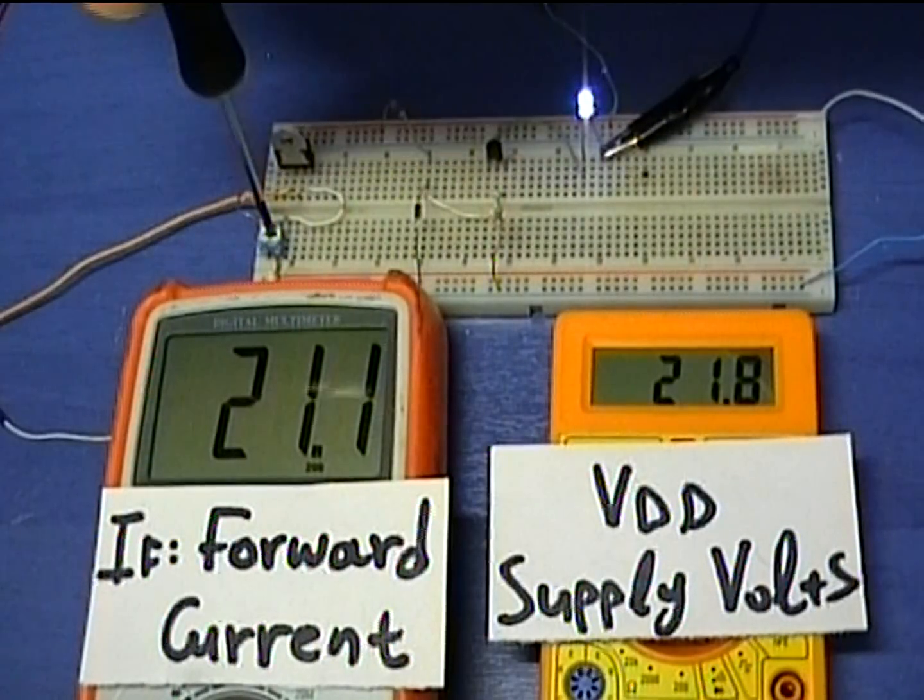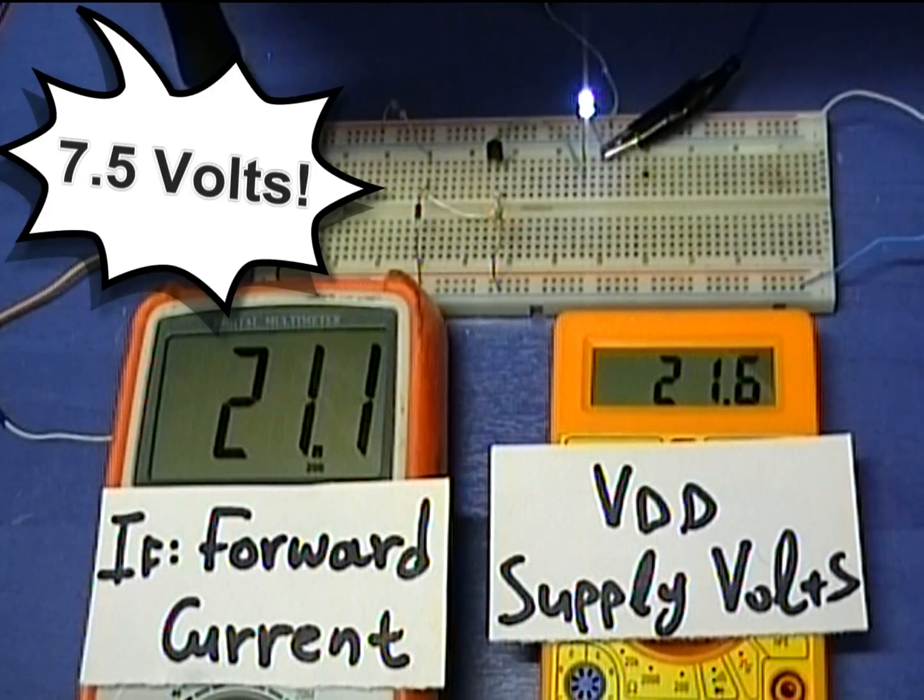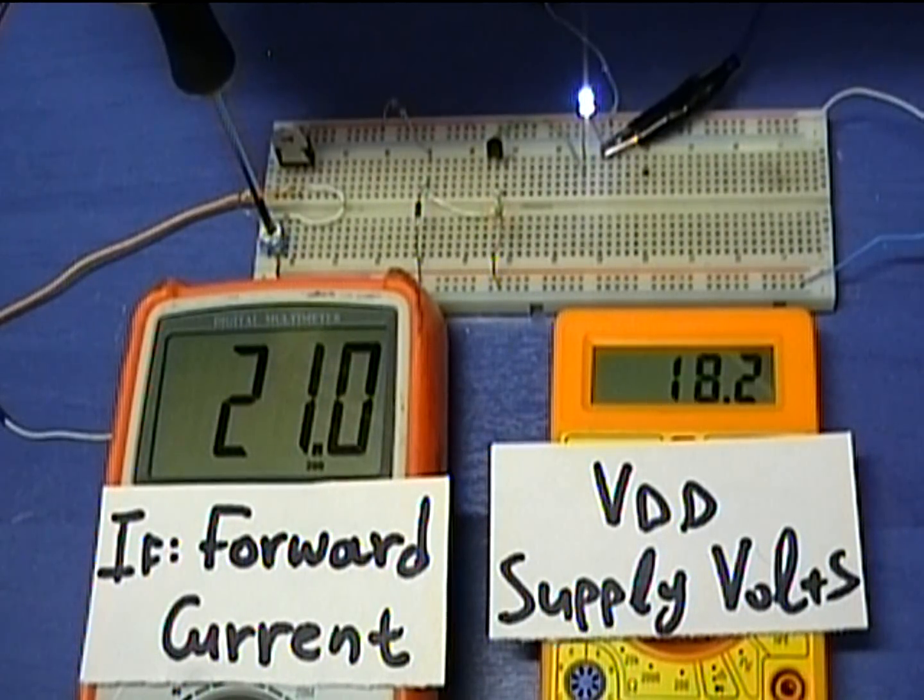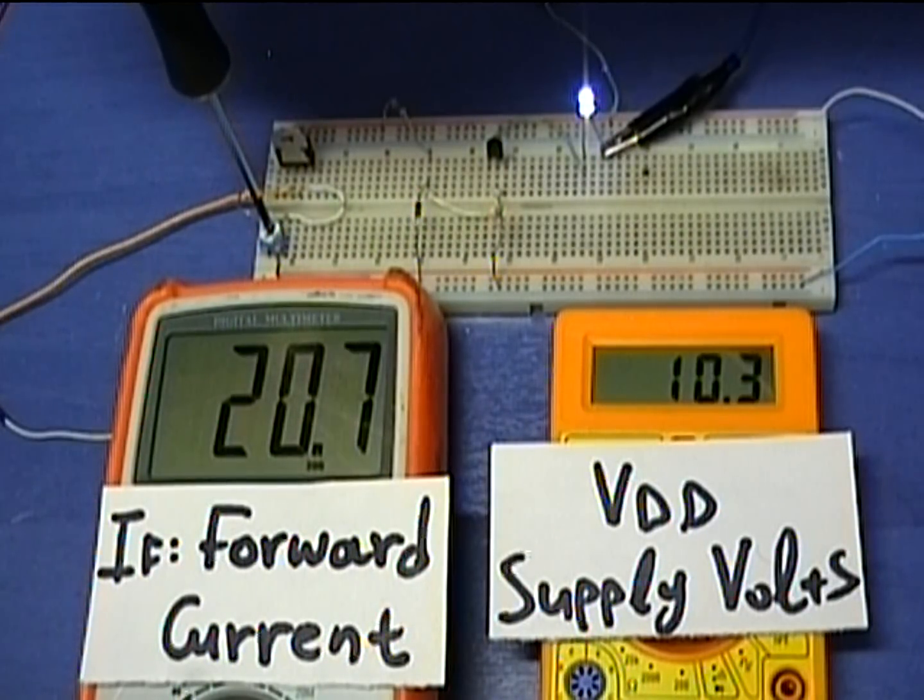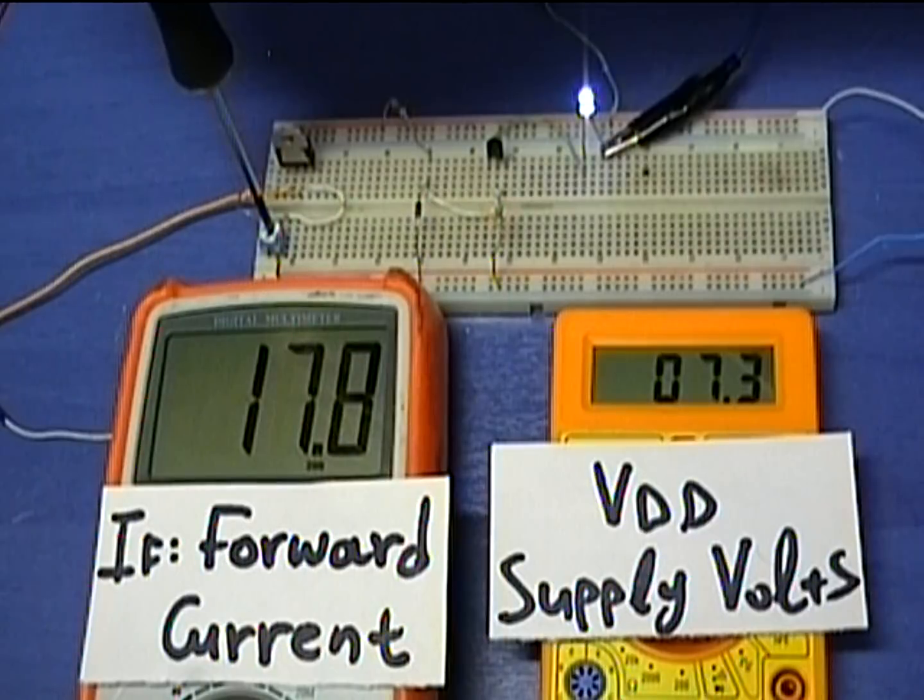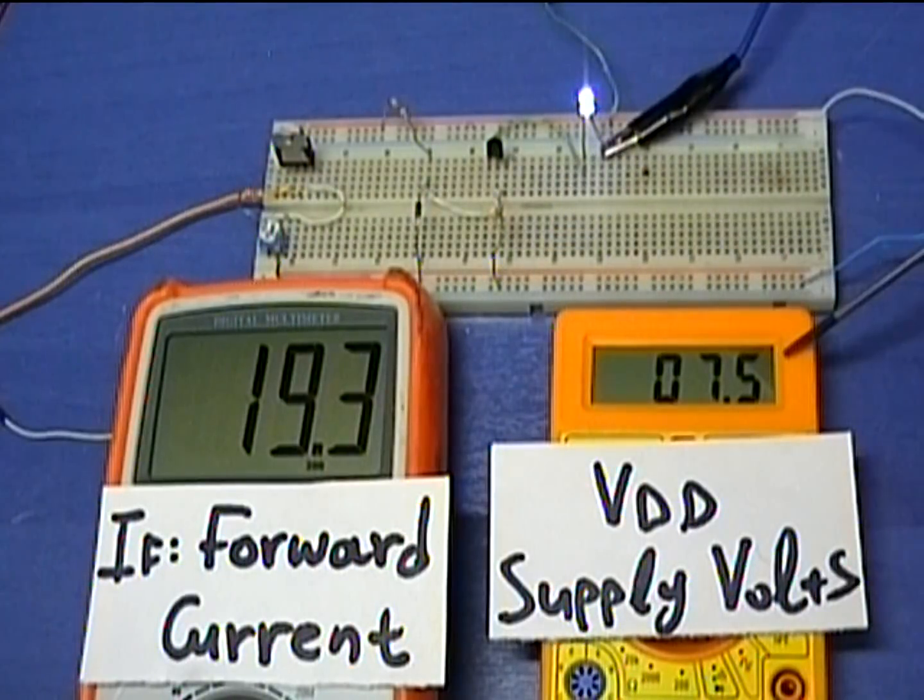This circuit works very well for voltages from about 6.5 volts up to 22 volts. The current through the LED changes only 1 mA within this range. Theoretically, you can use Zener diodes with lower Zener voltage, but this might result in a more unstable circuit. Try to use a Zener diode with as higher voltage as possible.